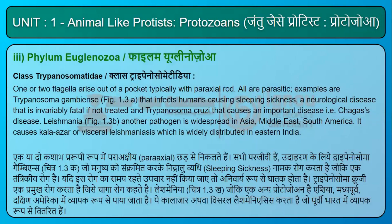Class Trypanosomatidae: one or two flagella arise out of a pocket, typically with a paraxial rod. All are parasitic. Examples are Trypanosoma gambiense (Fig. 1.3a), which infects humans causing sleeping sickness — a neurological disease that is invariably fatal if untreated — and Trypanosoma cruzi, which causes Chagas's disease. Leishmania (Fig. 1.3b), another pathogen, is widespread in Asia, the Middle East, and South America. It causes cutaneous or visceral leishmaniasis, which is widely distributed in eastern India.